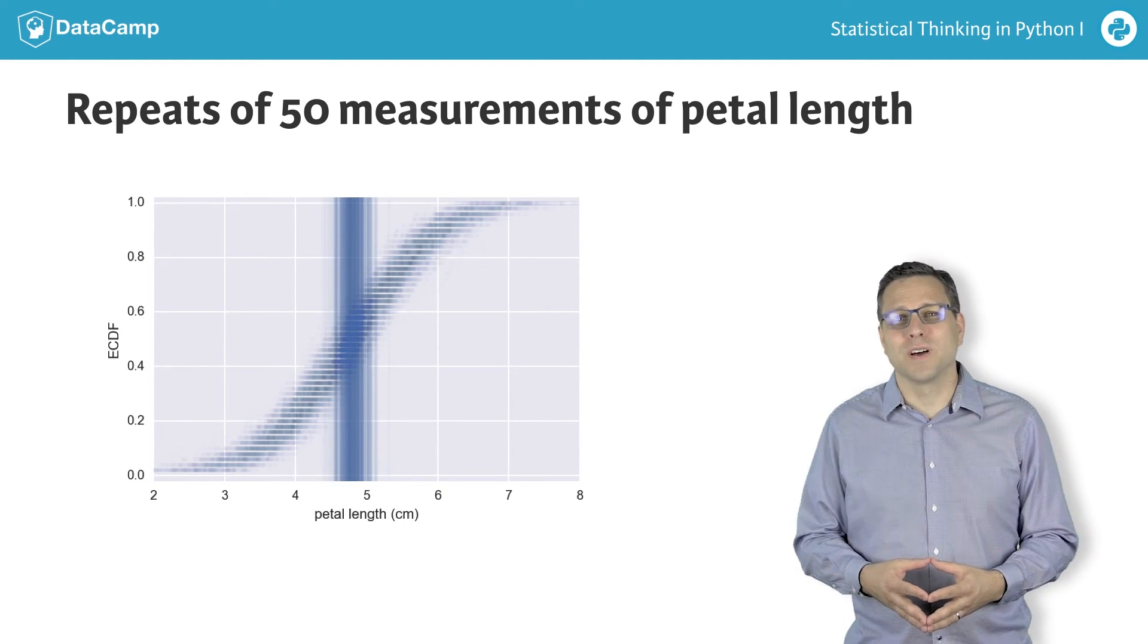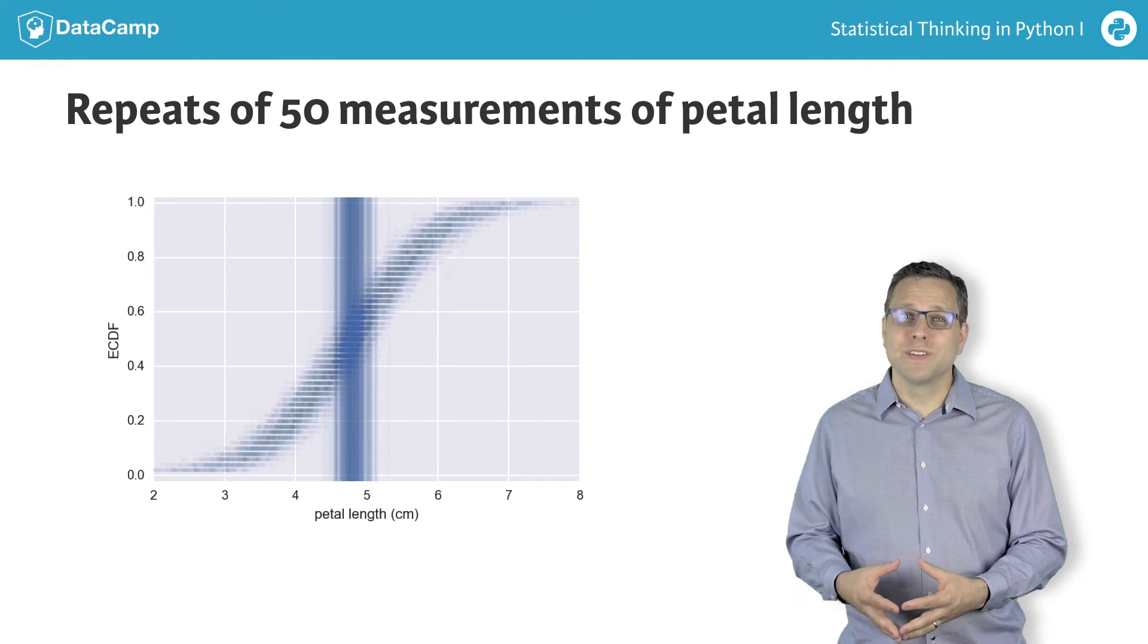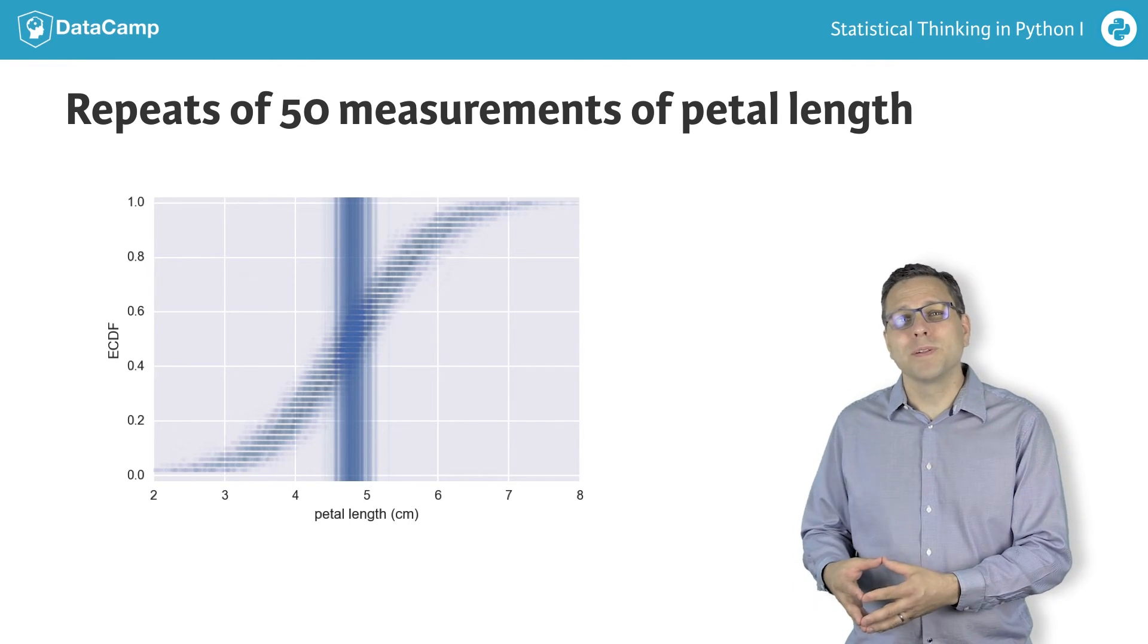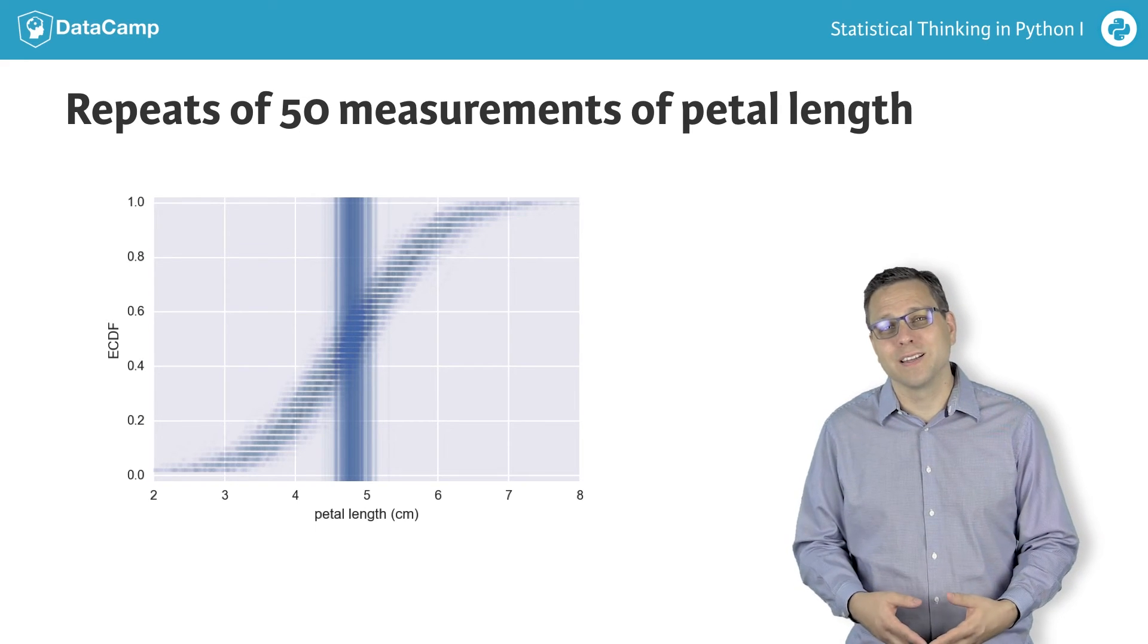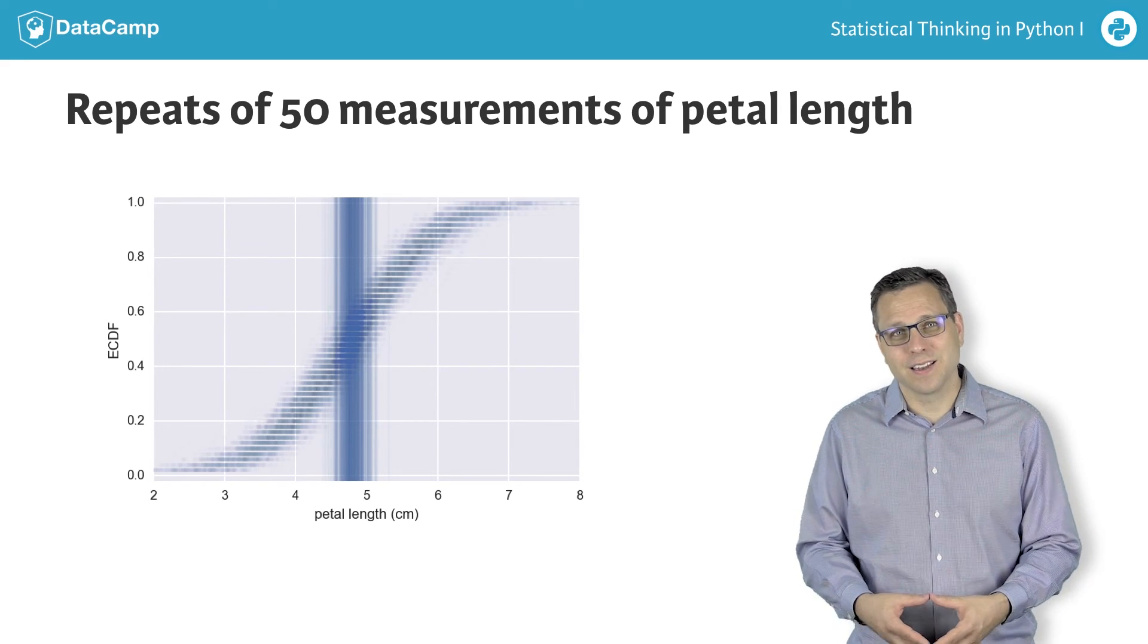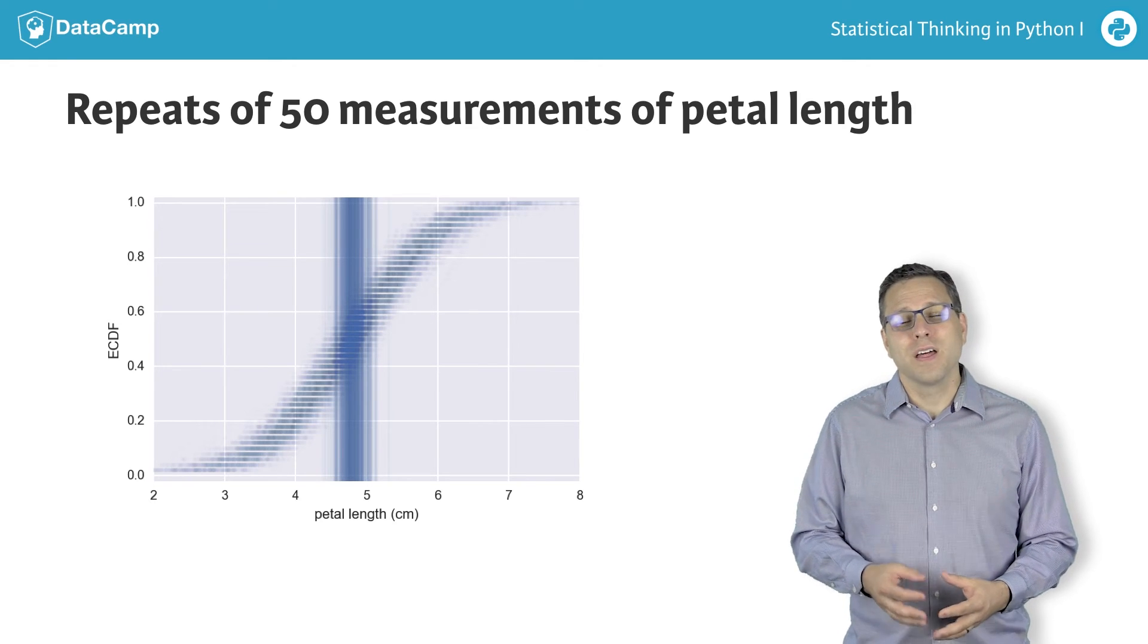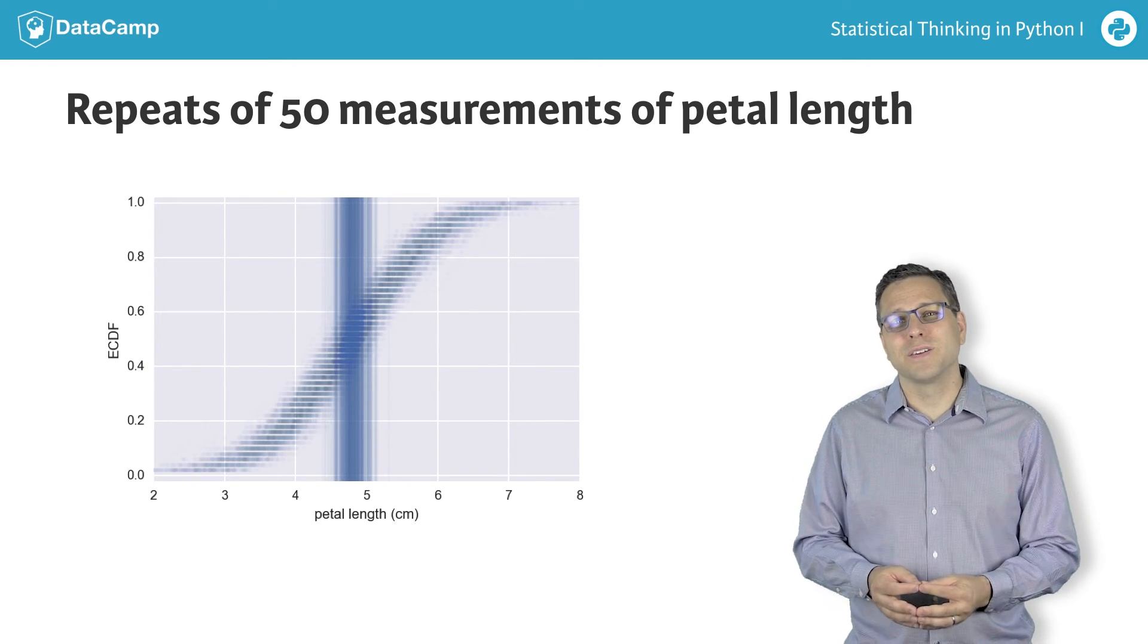This is what probabilistic thinking is all about. Given a set of data, you describe probabilistically what you might expect if those data were acquired again, and again, and again, and again.